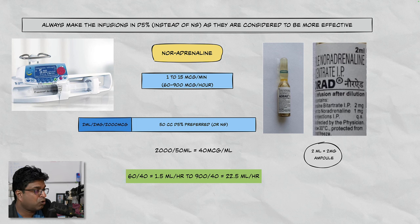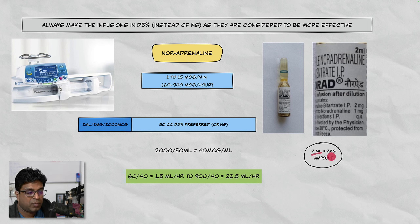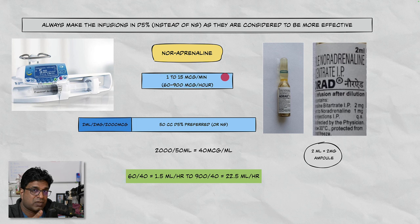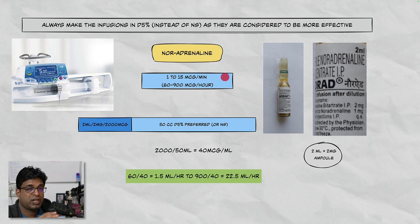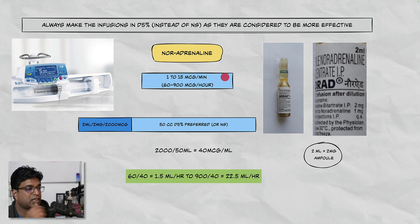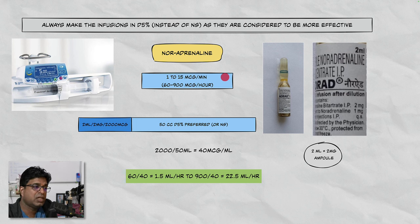Dobutamine is used in cardiogenic shock with low cardiac output and maintained blood pressure — this is very important. Because it is a vasodilator, blood vessels will dilate and though cardiac output increases, BP may fall. So if you want to use dobutamine, use noradrenaline or adrenaline alongside to maintain blood pressure. Dobutamine can also be used in septic shock in patients with cardiac failure, as an add-on to noradrenaline for cardiac output augmentation in septic shock with myocardial dysfunction.